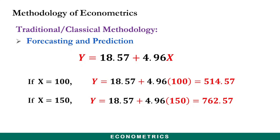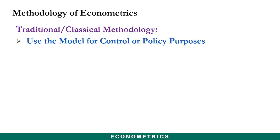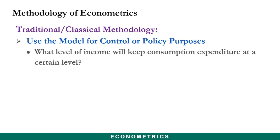After forecasting and prediction, the next step is to use the model for control or policy purposes. For example, a government might ask what level of income will keep consumption expenditure at a certain level. The government can formulate policy to control income using fiscal policy tools — taxation and government expenditure — or through monetary policy via the central bank to affect money supply and, in turn, the level of income in the economy.